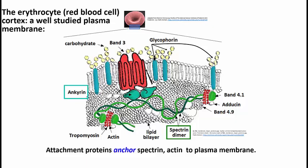Attachment proteins anchor spectrin, and also, if you notice, there's an actin molecule, which is also part of the cytoskeleton, and must be anchored to the cell membrane in order for the cytoskeleton to give the cell this shape. It has to exert a force on the membrane to give it a shape that would otherwise normally be spherical. The normal low energy configuration shape of a vesicle is a sphere, so this is obviously not a spherical cell.